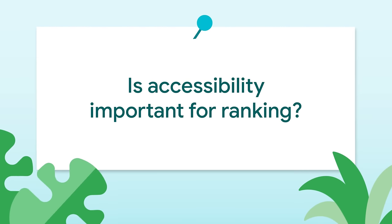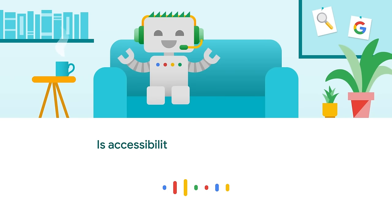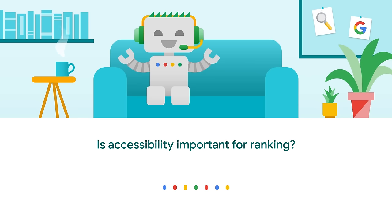Simon's asking: is accessibility important for ranking, thinking about PageSpeed Insights interpretation specifically? Accessibility isn't exactly important for ranking, but for your users. Some accessibility features such as image alt text are actually really useful information for Googlebot. But in general, you want to build a website that is helpful and useful to your users and to reach as many of them as possible. You probably want to take accessibility into account — it is a very important feature of the web platform.